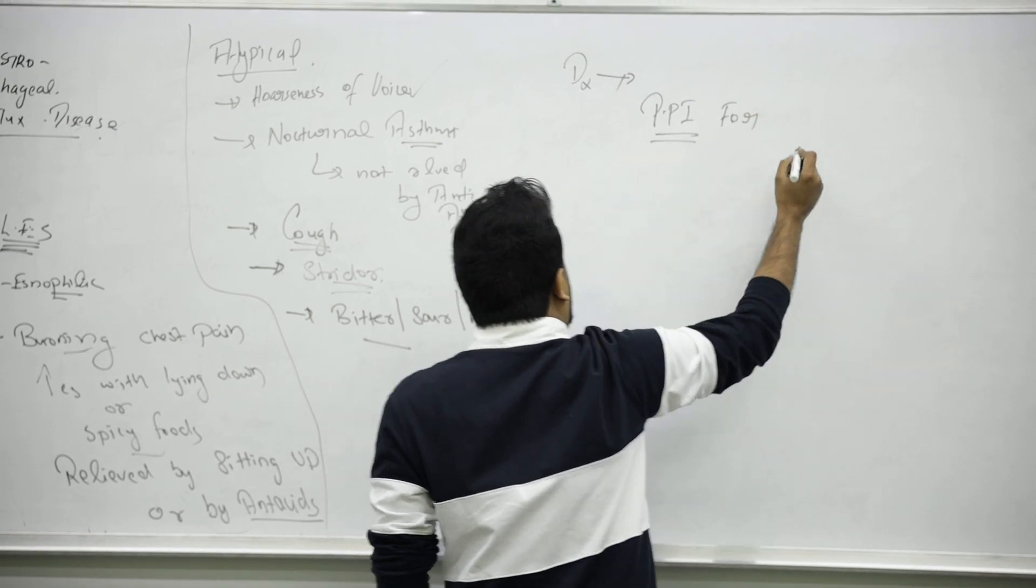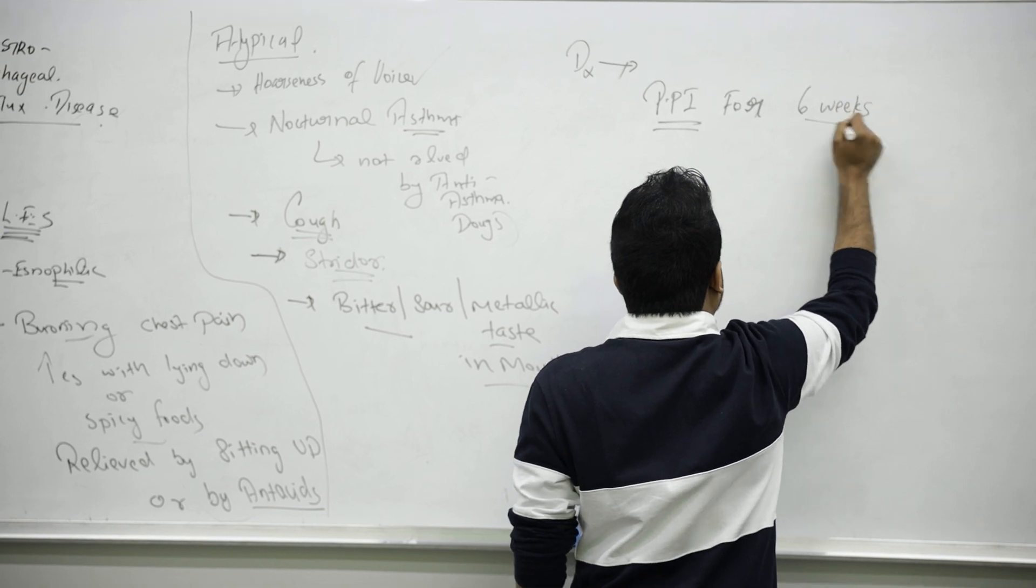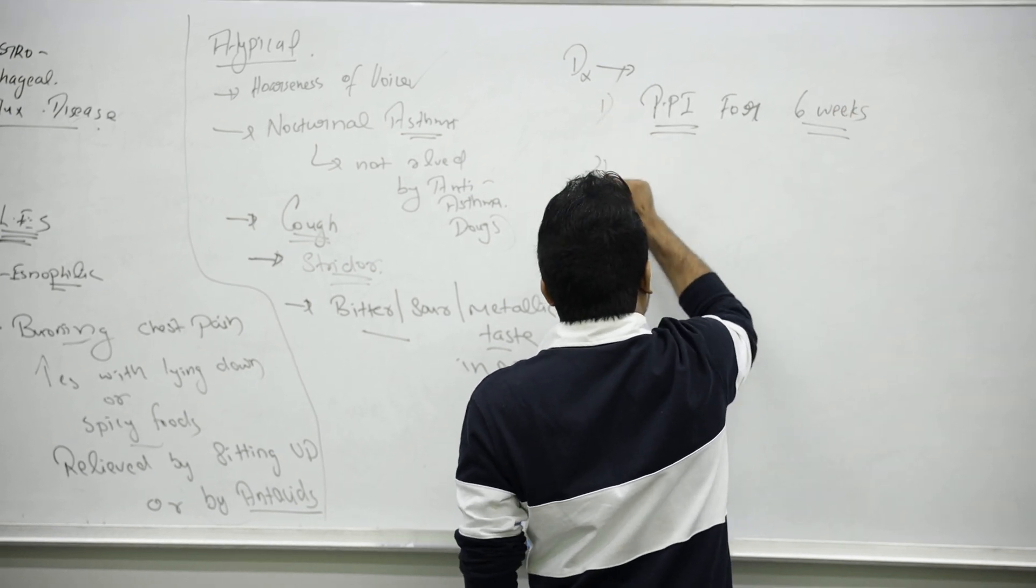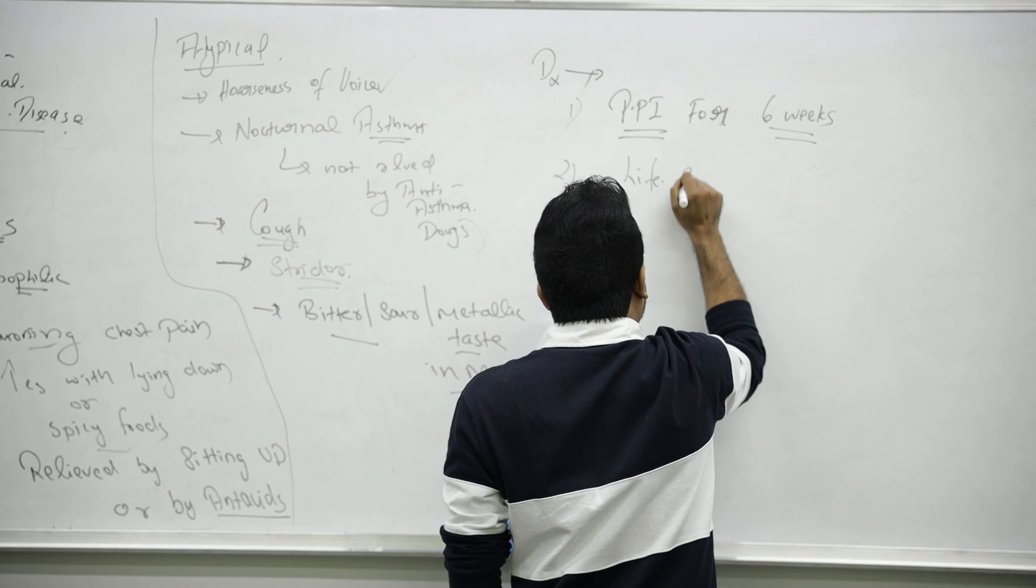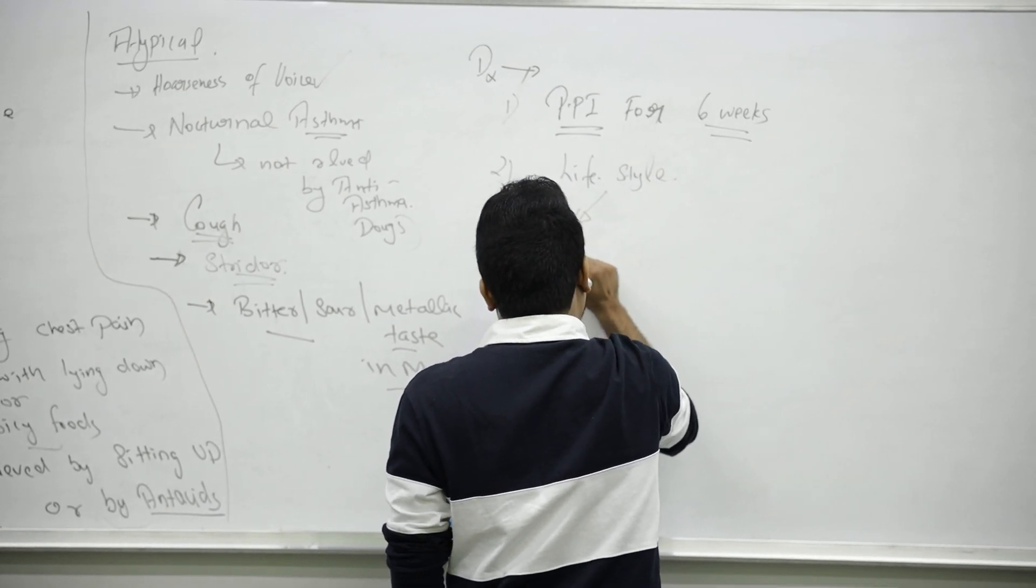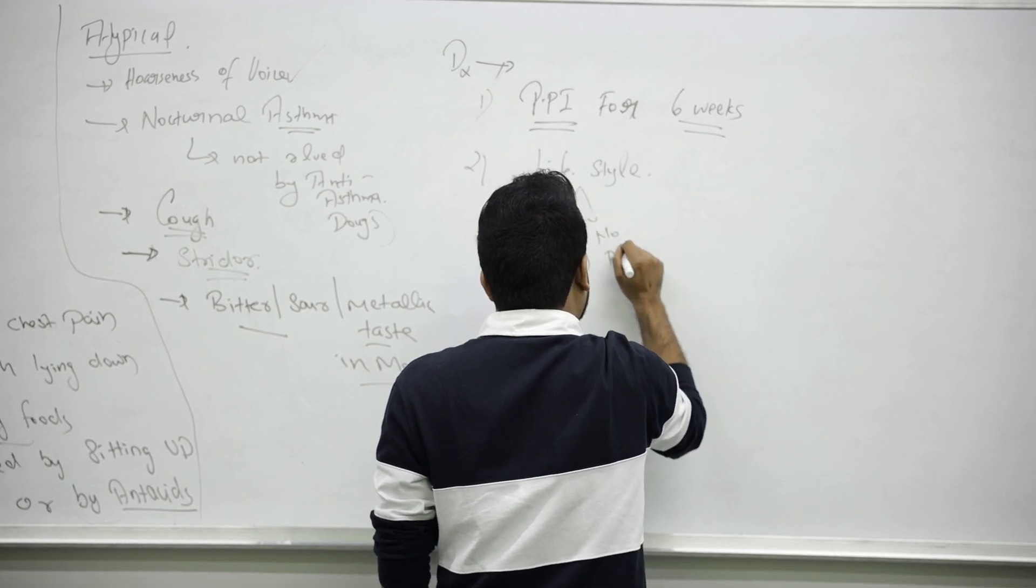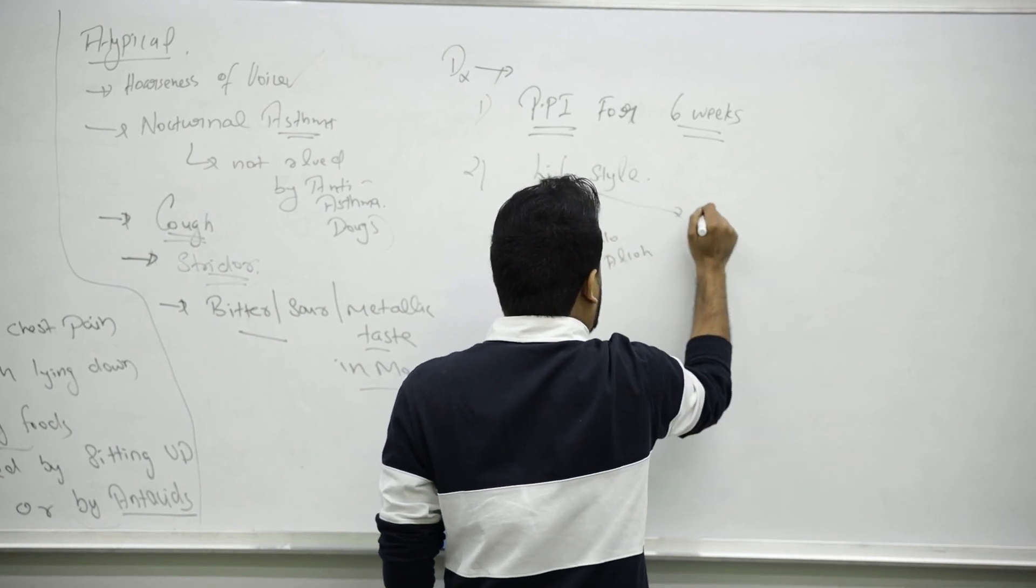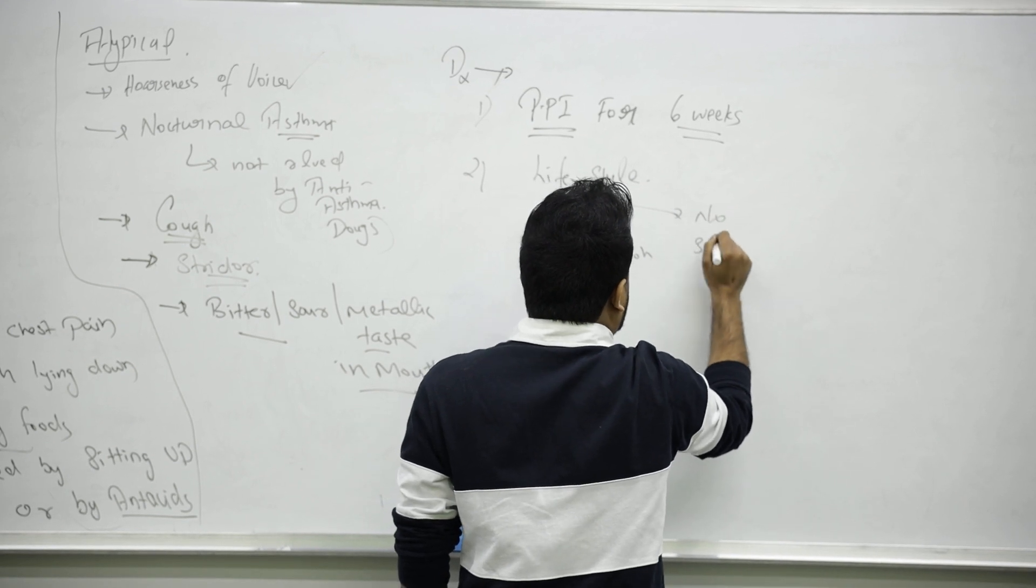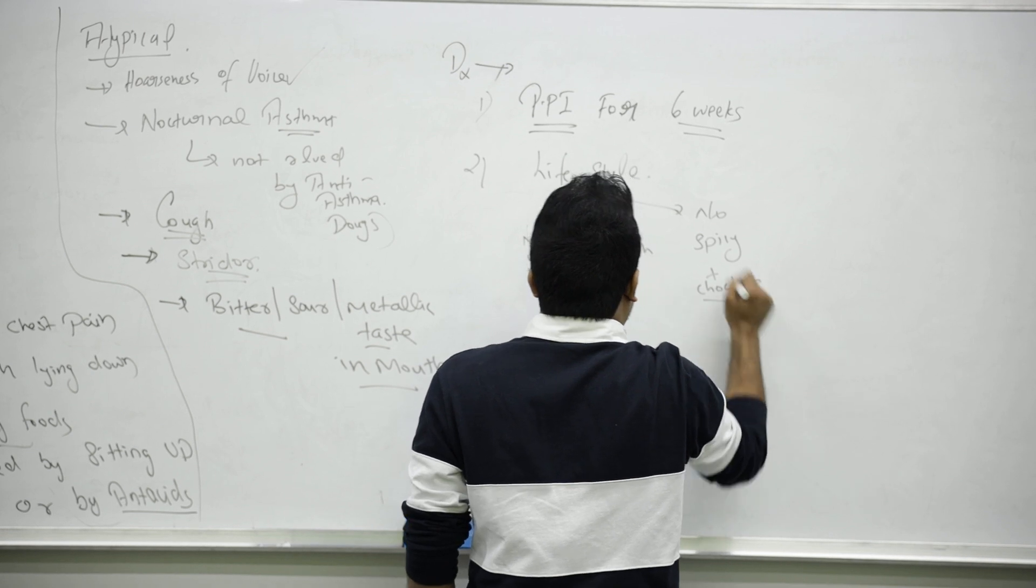You will give them PPI - the best drug, proton pump inhibitor - for around six weeks. Plus you will ask for some lifestyle modification: no smoking, mainly no alcohol, no spicy foods, as well as no chocolate. Ask them to avoid these.